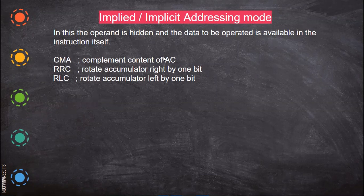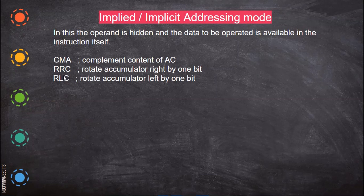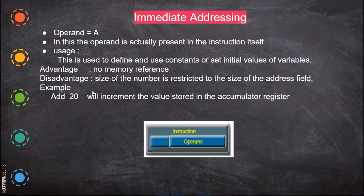CMA means complement the content of the accumulator. When you issue CMA, you don't write 'CMA A' — this three-letter opcode itself means complement the value present in the accumulator and store the result back in the accumulator. The operand is not explicitly given; the accumulator is implied. Similarly, RRC means rotate the content of the accumulator right by one bit, with no explicit operand given. The same applies to rotate left of the accumulator content.